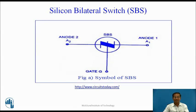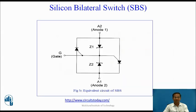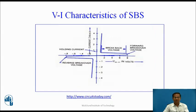This is the schematic symbol of SBS having three terminals: Anode 2 (A2), Anode 1 (A1), and gate terminal. This is the equivalent circuit of SBS. This is the VI characteristics of SBS. This characteristic is similar to the DIAC.